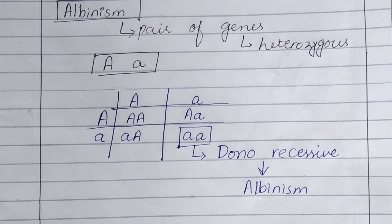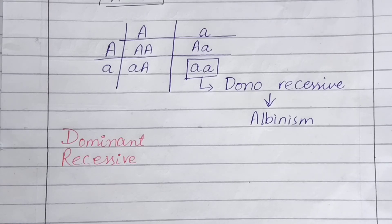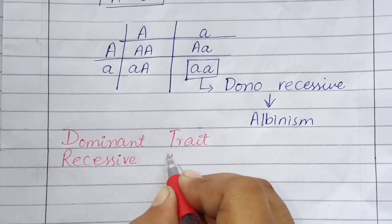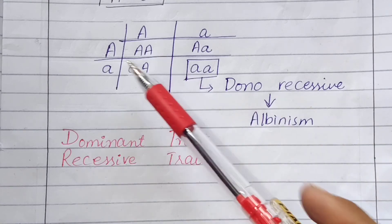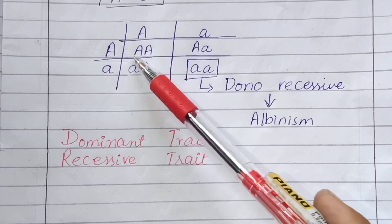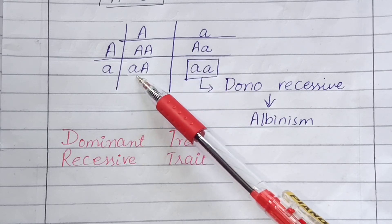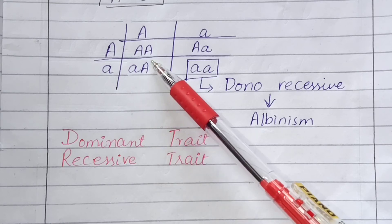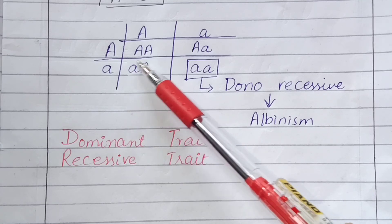The next two points are dominant and recessive traits. If we talk about dominant and recessive traits, there are two traits present. If we look at the recessive trait and dominant trait, the dominant trait is expressed. If we look at a pair, this is a dominant and recessive trait combination, and the dominant trait shows.